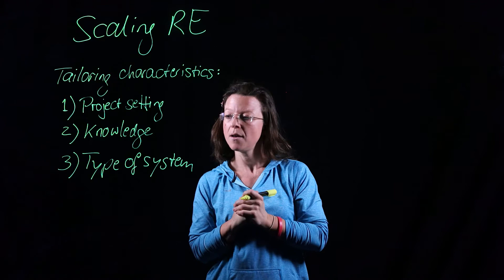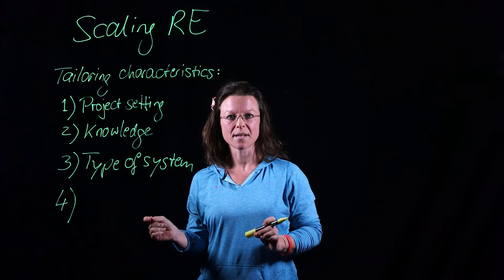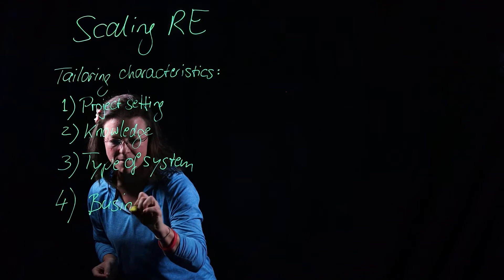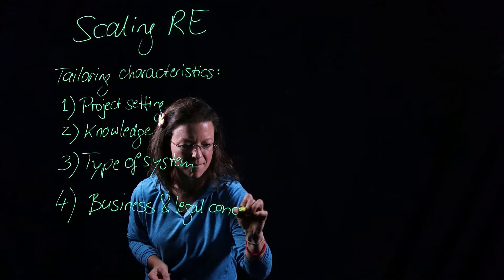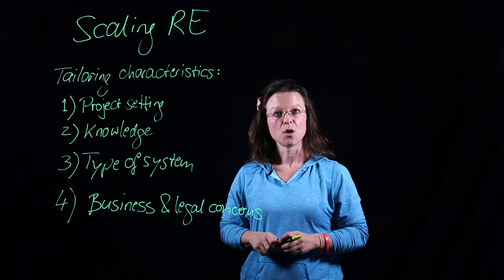Number four are business and legal concerns. This involves certain business rules that may apply in the company that I'm developing a system for. This may involve some patent issues, some copyright issues that I still have to clarify before I can start rolling.